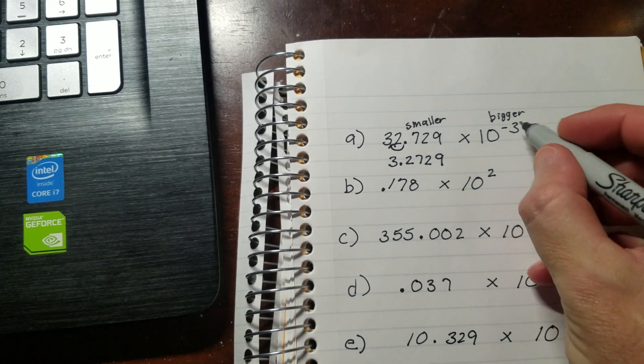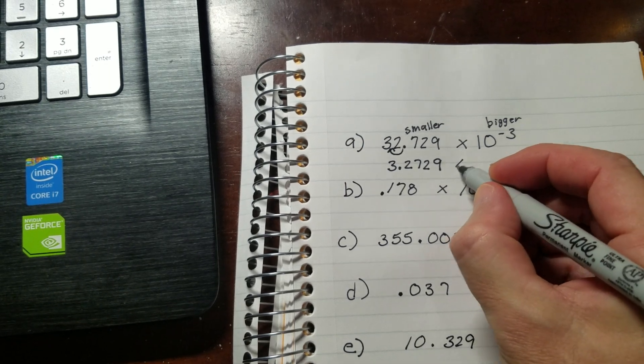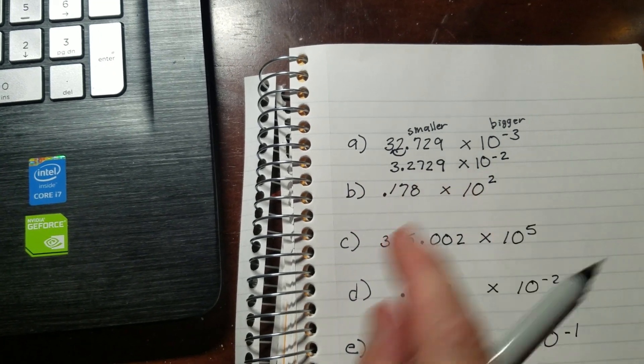So what I'm going to do here is I'm actually going to make this bigger by 1, because I actually moved the decimal 1. So I'm going to make it negative 2. So now this number is in scientific notation.